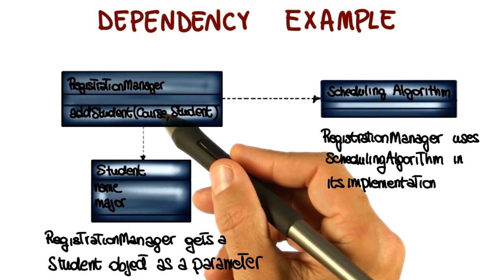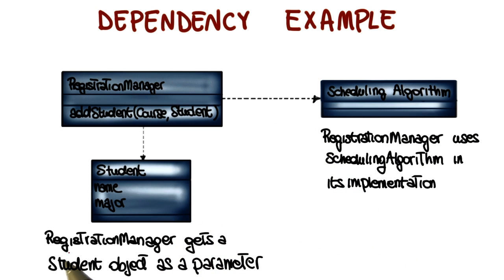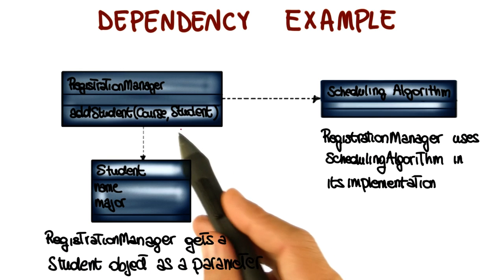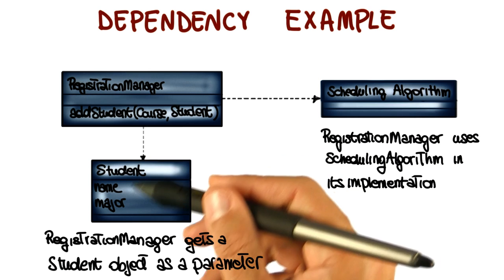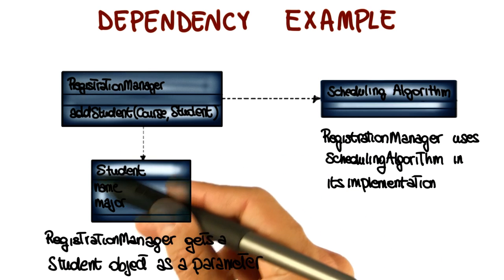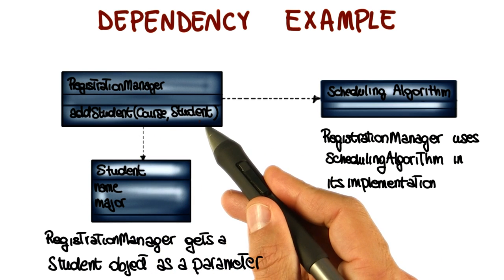Another less obvious example is the dependency between the registration manager and the student. In this case, because the registration manager gets a student object as a parameter, here, there is a dependency between the two. Again, if the student class were to change, the registration manager might be affected because it's relying on the student for its behavior.